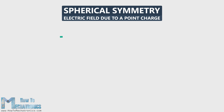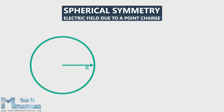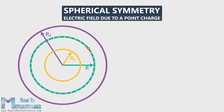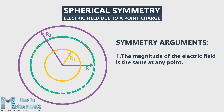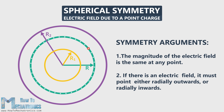We will start with the spherical symmetry. This is a thin hollow sphere with radius R and we will bring a positive charge Q into the thin shell, which is uniformly distributed. Now we need to find the electric field inside the sphere at a distance R1 from the center and outside the sphere at a distance R2 from the center. To do that, we need to determine our Gaussian surface. In this case, we will choose concentric spheres as Gaussian surfaces, one smaller with radius R1 and other larger with radius R2. Now we need to use two symmetry arguments that will help us calculate the electric field. The first symmetry argument shows that the magnitude of the electric field is the same at any point, since the charge here is uniformly distributed. The second symmetry argument shows that if there is an electric field, it must point either radially outwards or radially inwards.